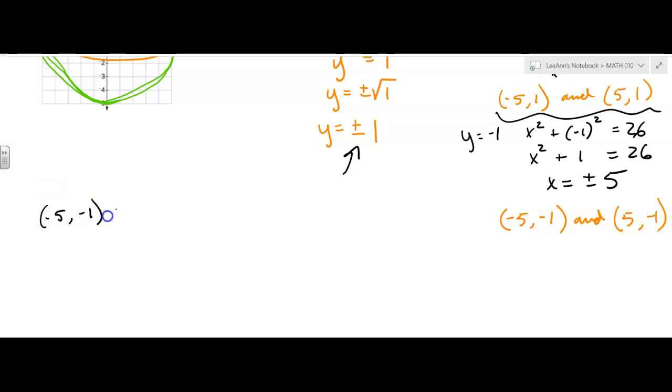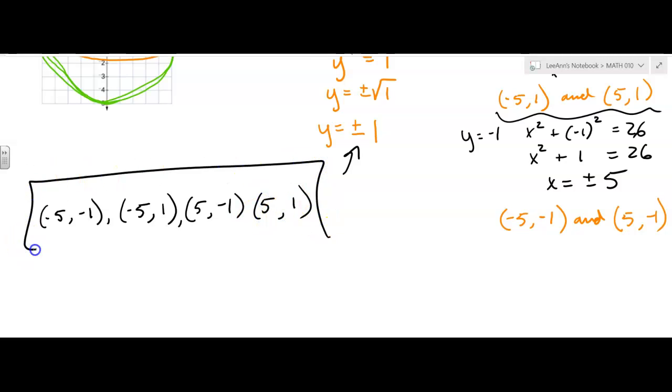Negative 5, negative 1. I don't know how you want to list them, but it doesn't really matter. Negative 5, positive 1, negative 5. Oh, sorry. I did the two negative 5 one. So positive 5, negative 1, and positive 5, positive 1. But those are the solutions.